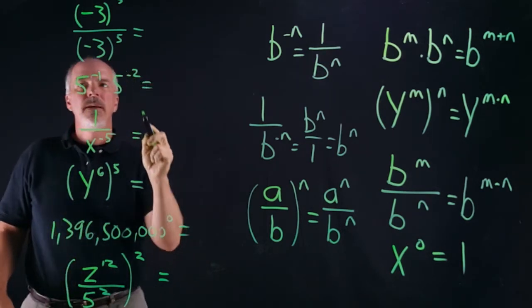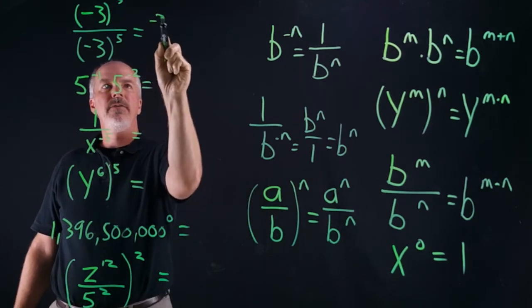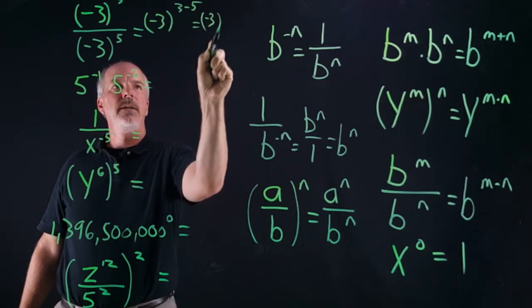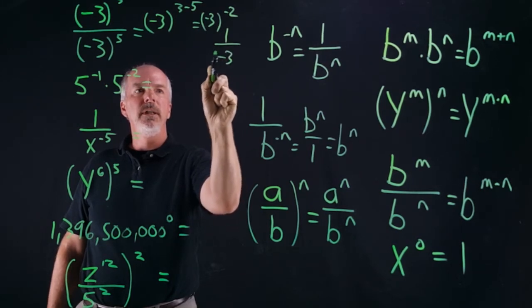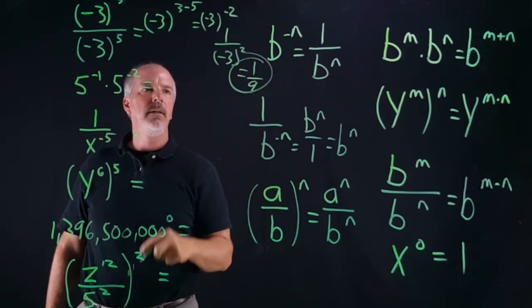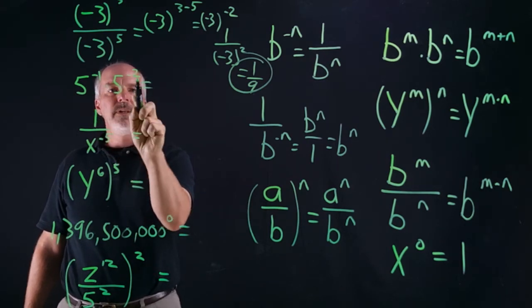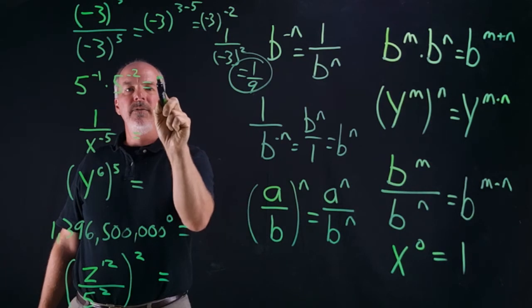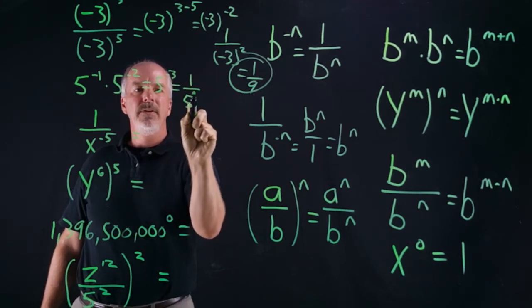Negative three to the third divided by negative three to the fifth — with division we subtract the exponents, so it's negative three to the three minus five, which is negative three to the negative two. When we have a negative exponent, we change that to one over negative three to the second, which equals one over nine. Five to the negative one times five to the negative two — we add, so five to the negative one plus negative two is five to the negative three, which is one over five to the third, equaling one over 125.